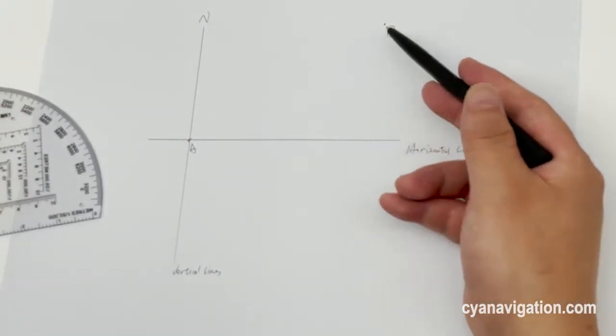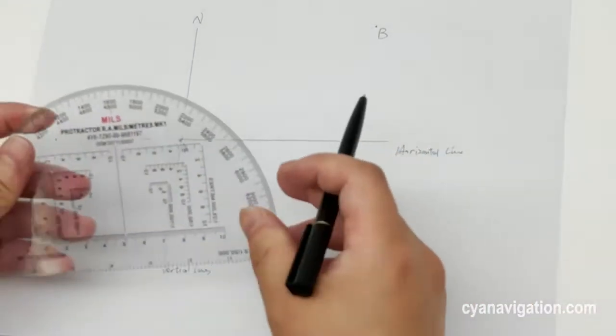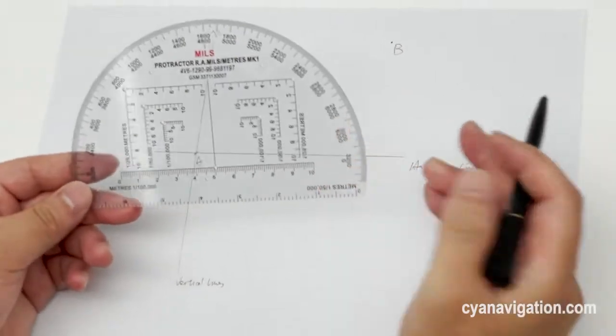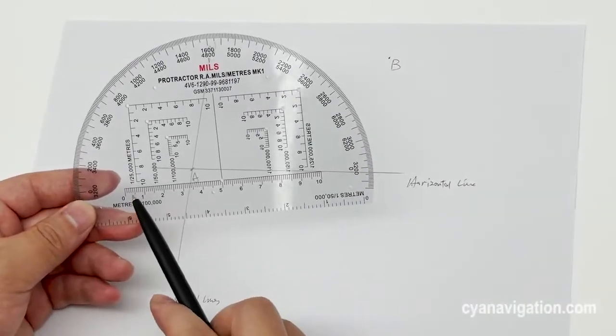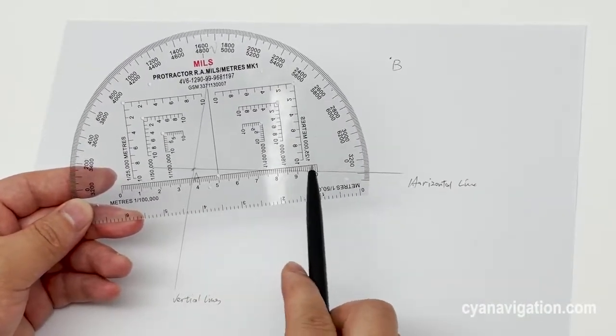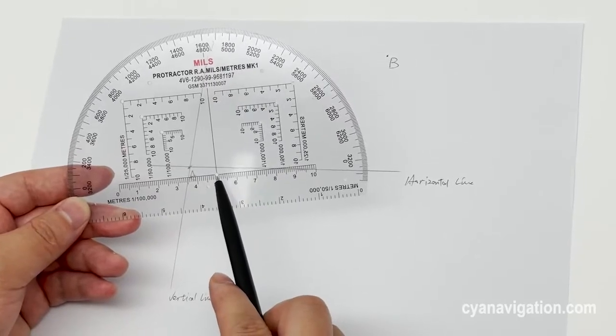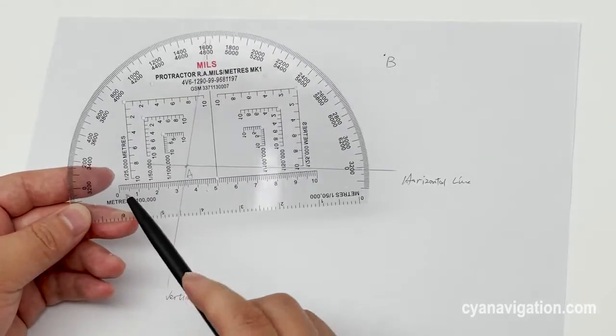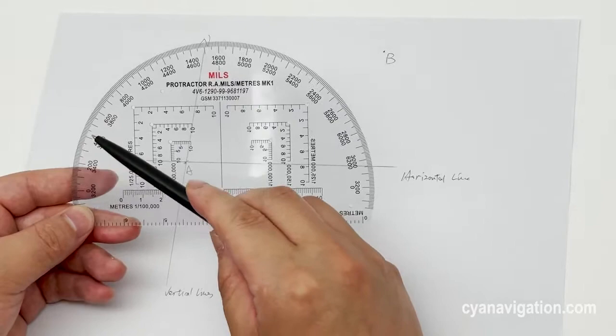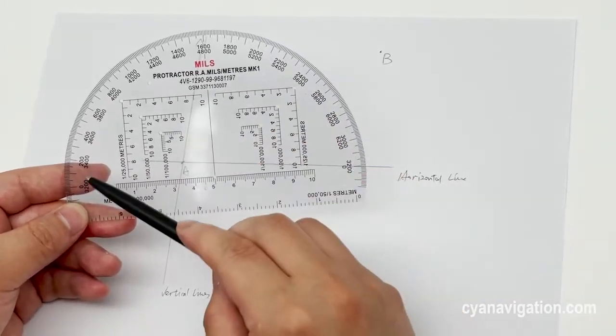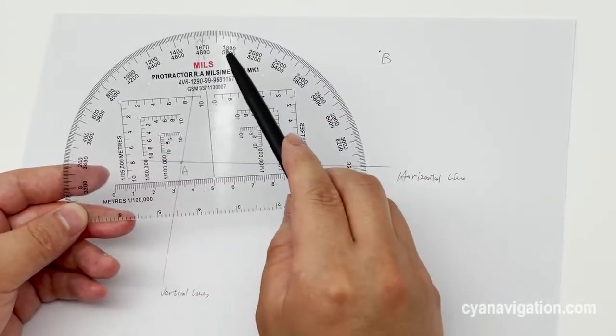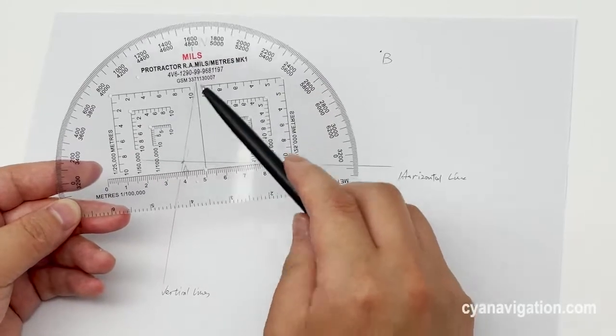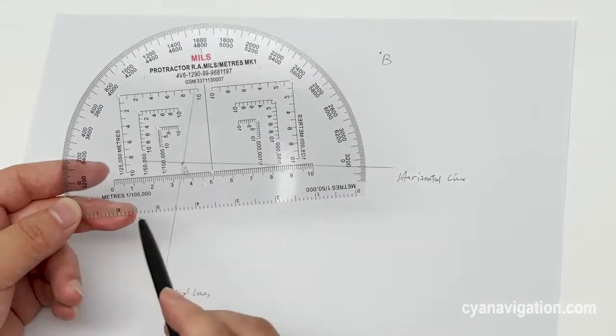Now let's see this protractor. Here we can see the zero lines here with this central point, and we can also read the outer scales here and the inner scales with the numbers. It also includes the kilometer scales.